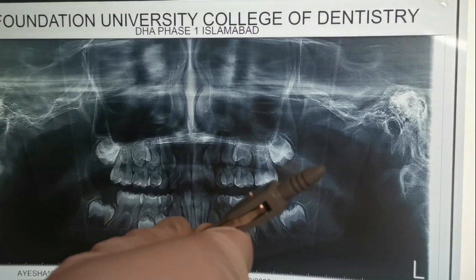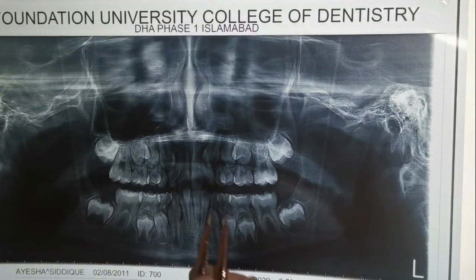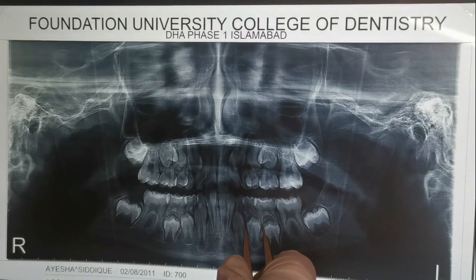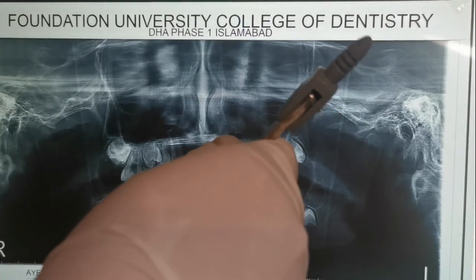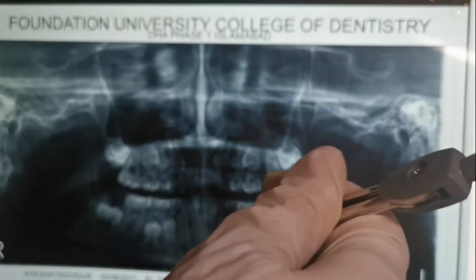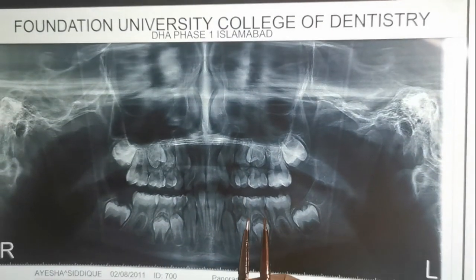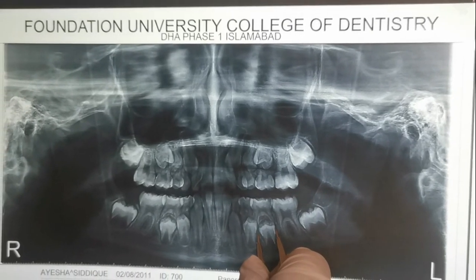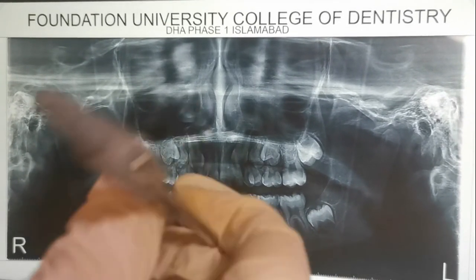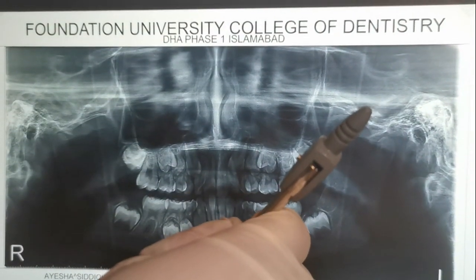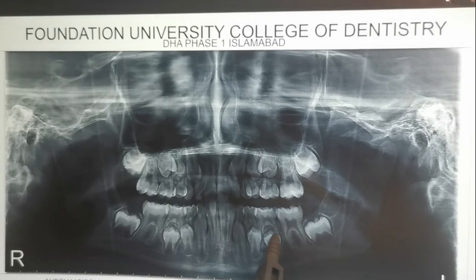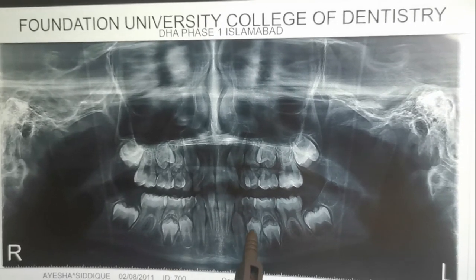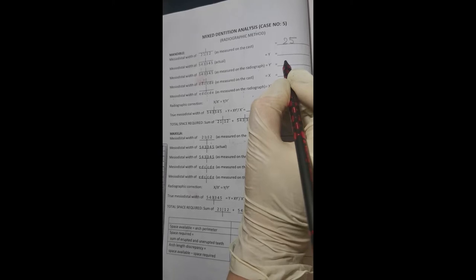In the same way, measure the mesiodistal widths of canines and premolars on the left side: canine is 7 mm; first premolar is 8 mm; second premolar is 9 mm. Add the widths of canines and premolars of both left and right sides — the sum is 49 mm.